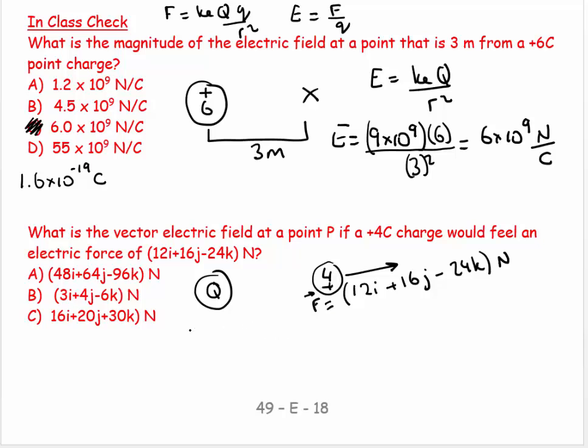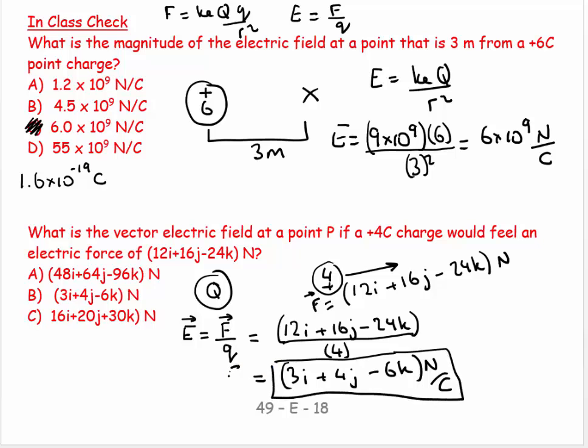So I can say, my vector electric field is equal to my vector force divided by the Q feeling the force. So this equals 12i plus 16j minus 24k divided by 4. So this equals 3i plus 4j minus 6k newtons per coulombs. And there we have that. I got the wrong units in my key. Newtons per coulombs, newtons per coulombs.